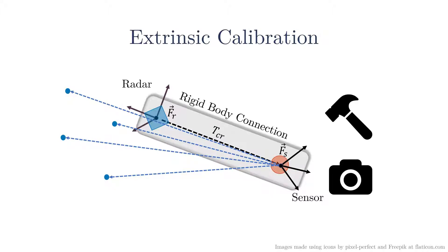However, this transform can change due to user modification or through material fatigue. Consequently, users require a process to estimate this transform in the field. This process is known as extrinsic calibration.